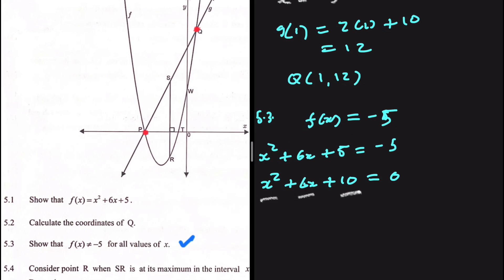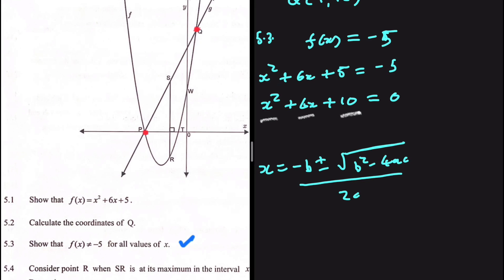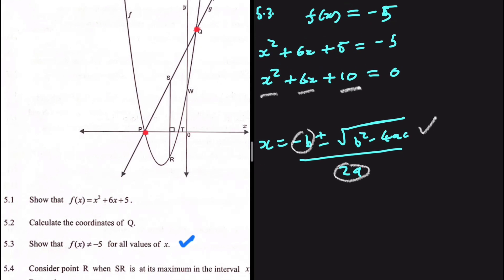To solve this, we need the quadratic formula: x equals minus b plus or minus the square root of b squared minus 4ac, all divided by 2a. There are no issues with 2a or minus b — what we focus on is the discriminant, b squared minus 4ac. If that value is negative, we cannot take its square root, which would imply f of x can never equal minus 5.